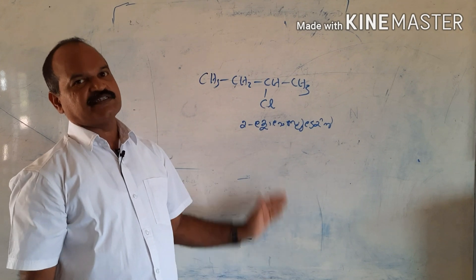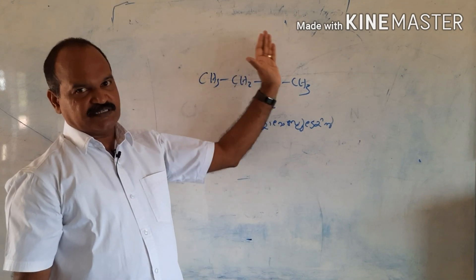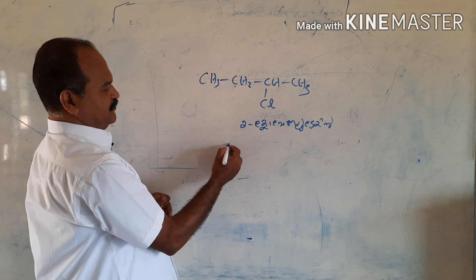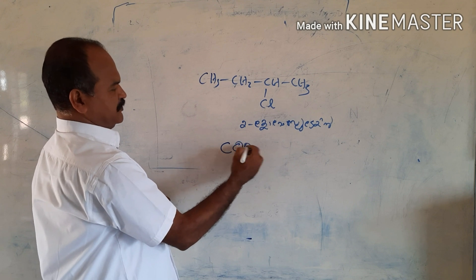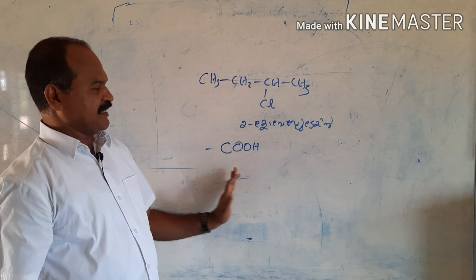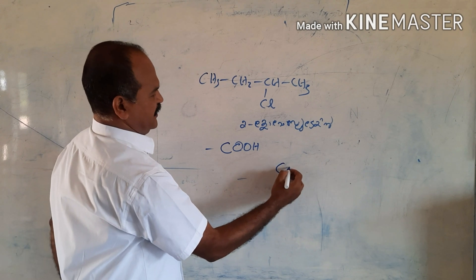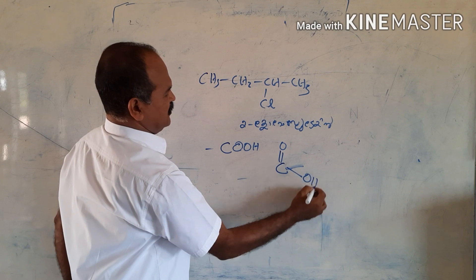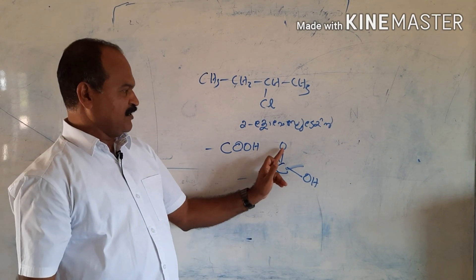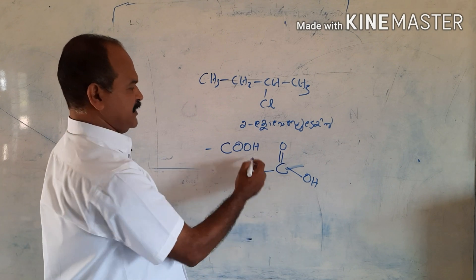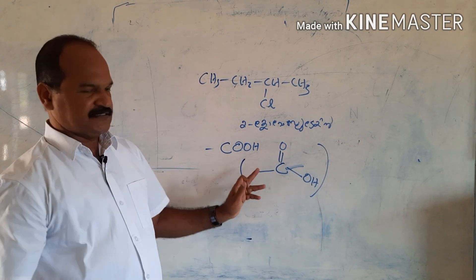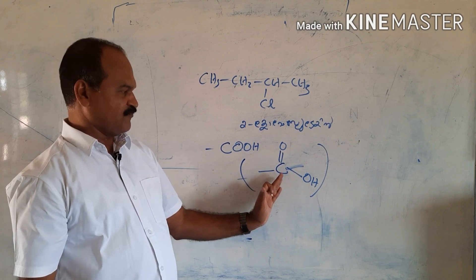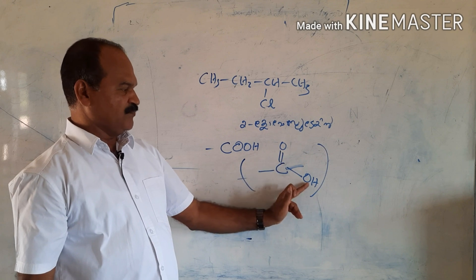Now the name of the functional group is called the functional group. And the functional group is called the functional group. We will learn how to use the functional group. How do you know the structural formula? The structural formula is called C double bond, and single bond is called OH. We will learn how to use the C double bond. The functional group is called the structure formula. The C double bond is called OH single bond.